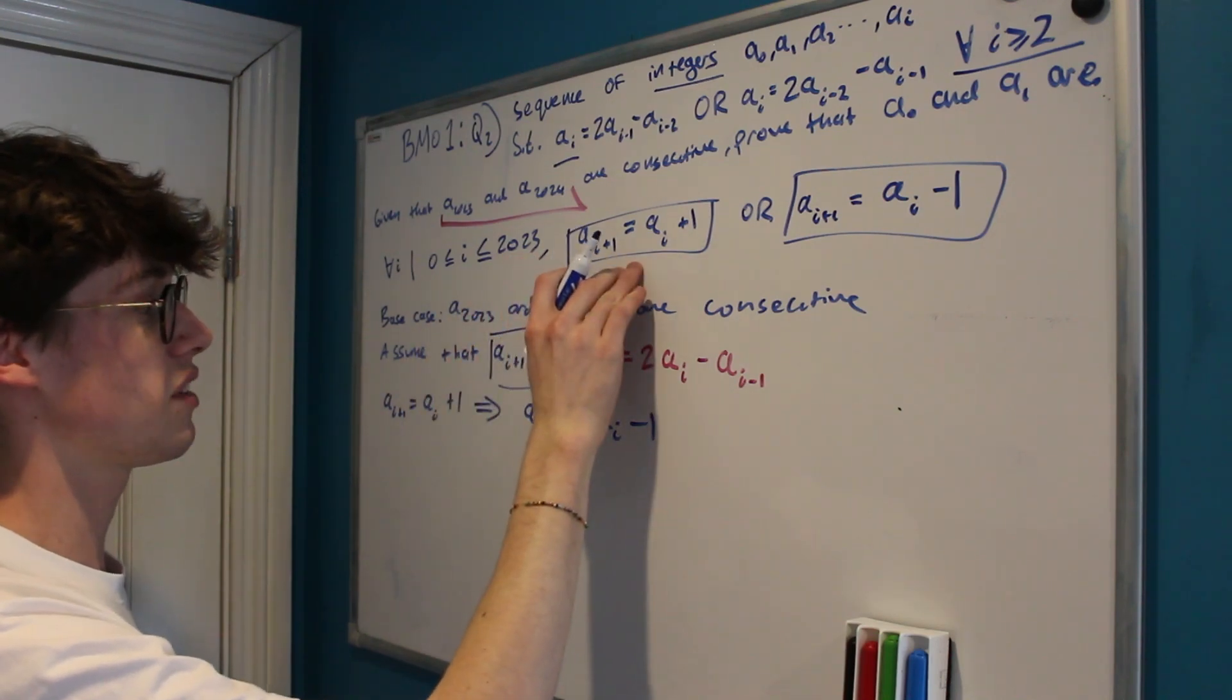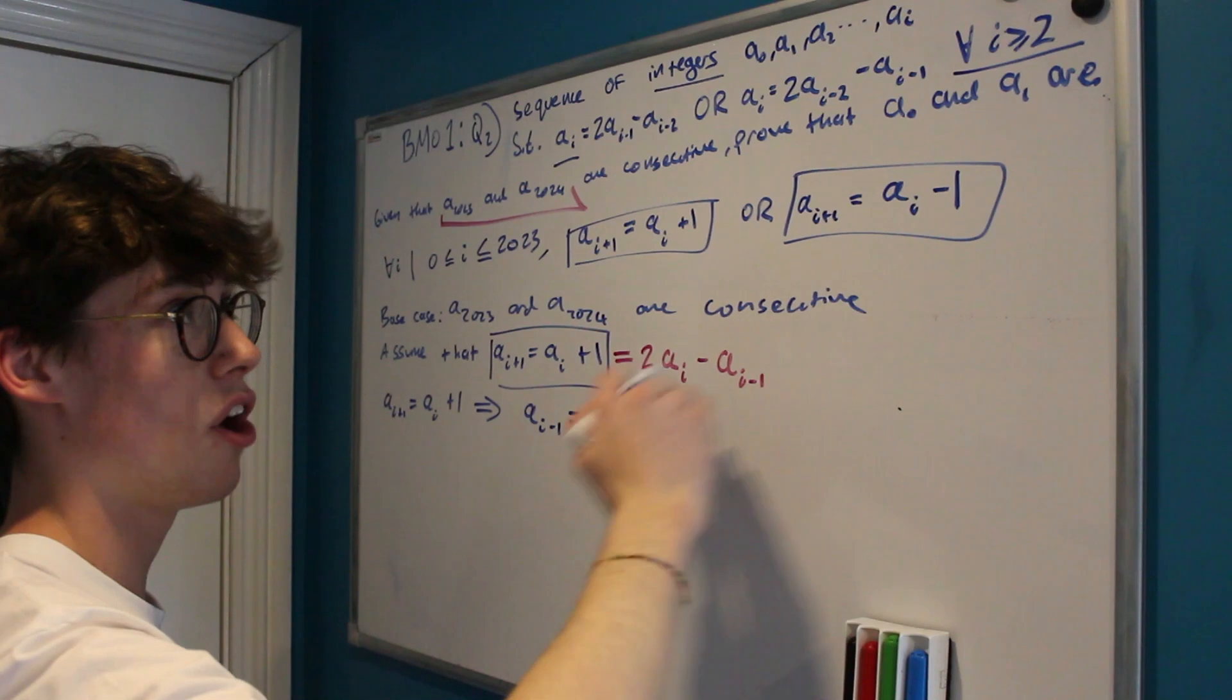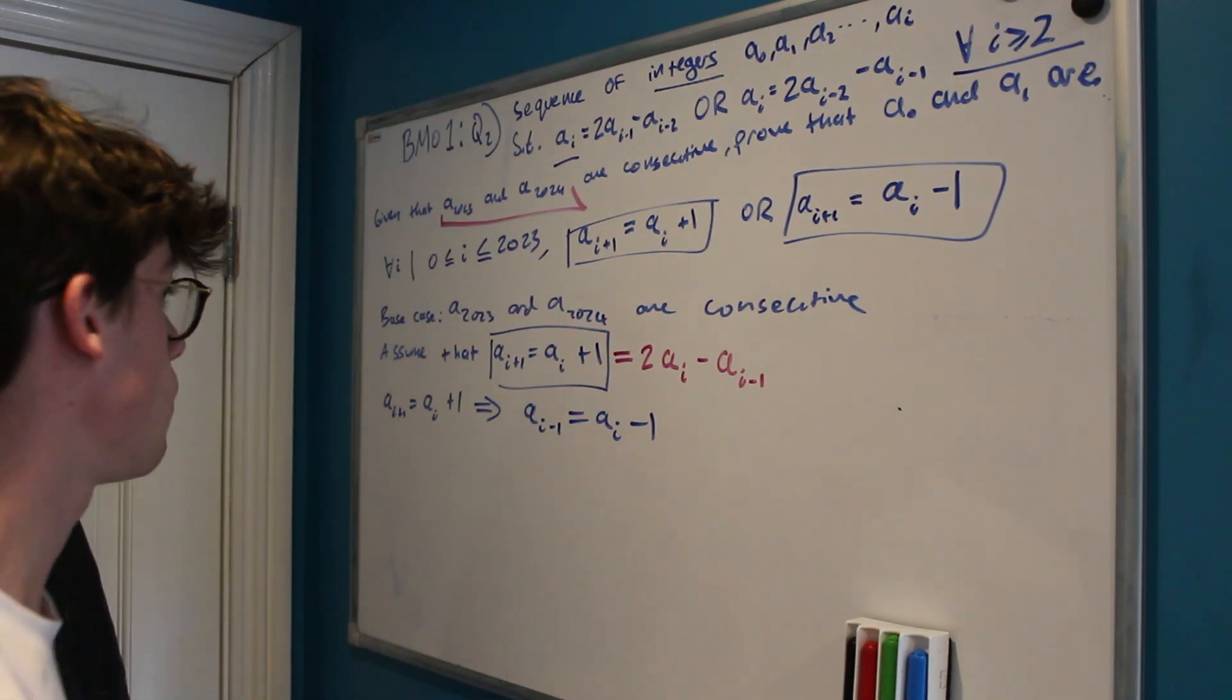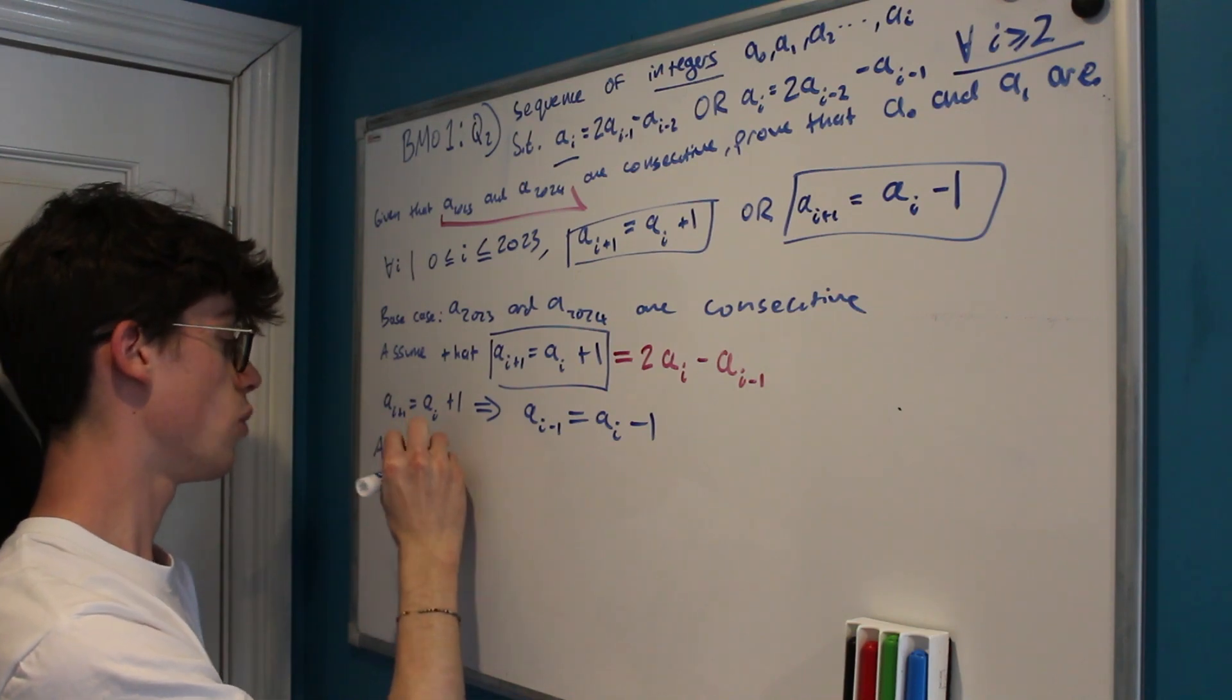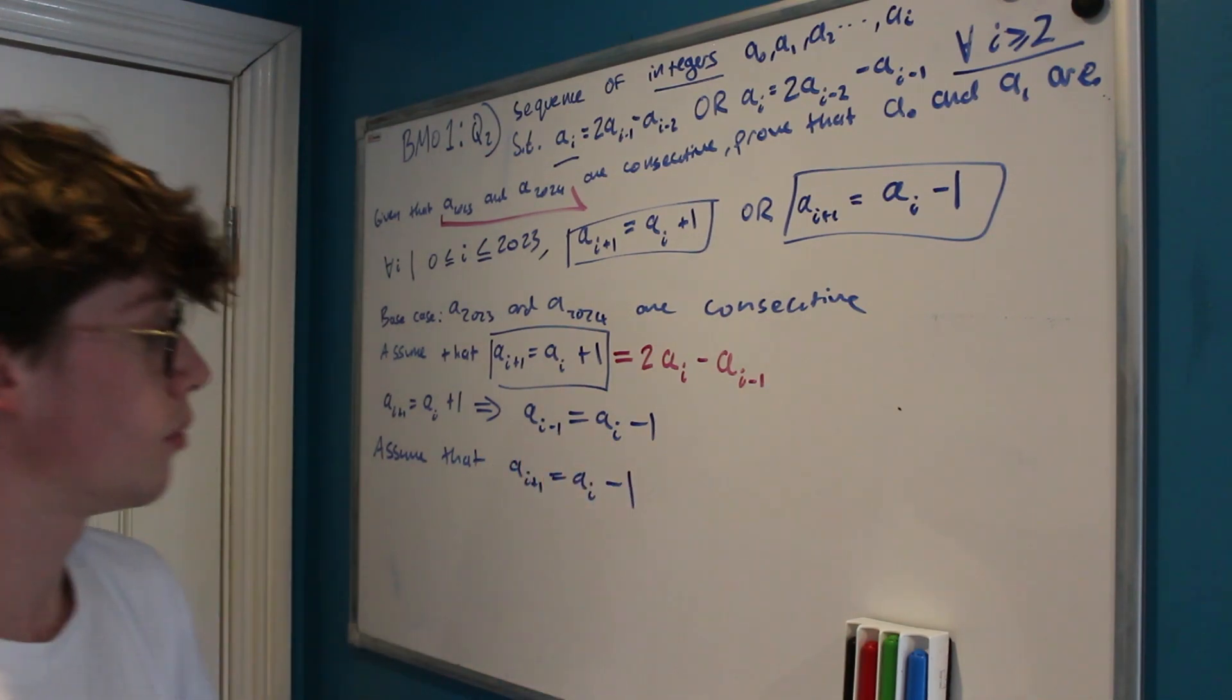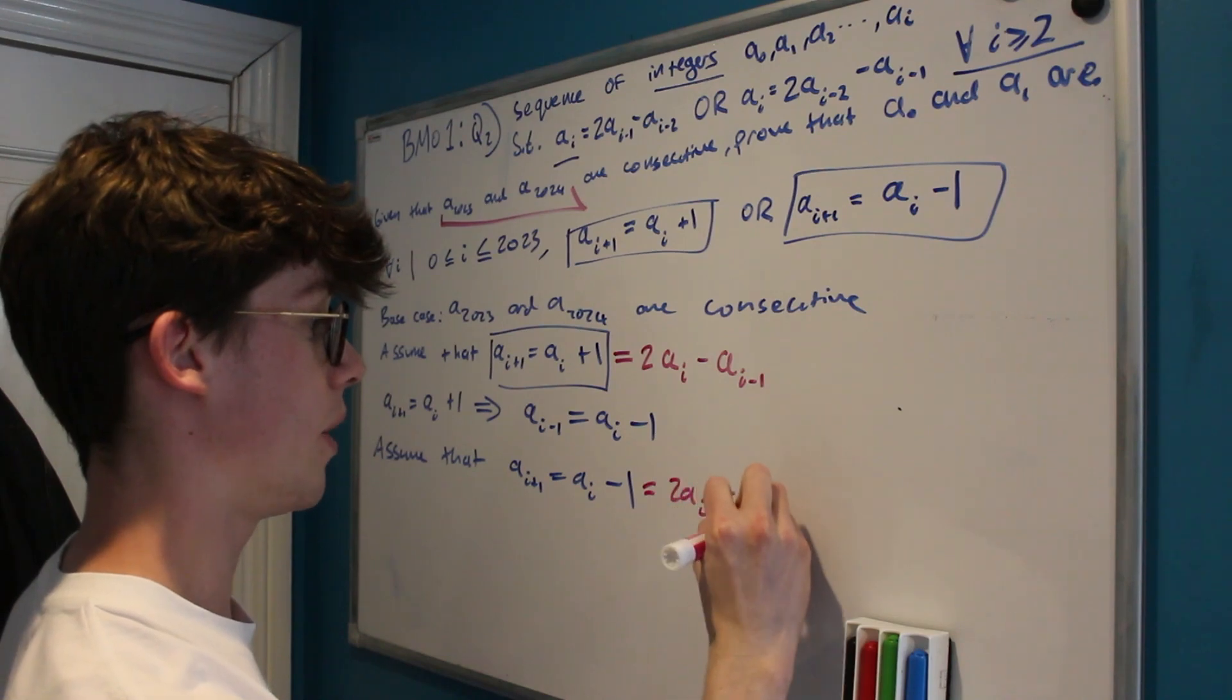But what about if they're not consecutive in this way? This was our first case. It could be that each time that ai gets bigger our term actually gets smaller. We can't just assume that it's going to be increasing consecutively, it could be decreasing consecutively. So let's have a look at our second assumption. Alternatively we could assume that ai plus 1 is equal to ai minus 1.